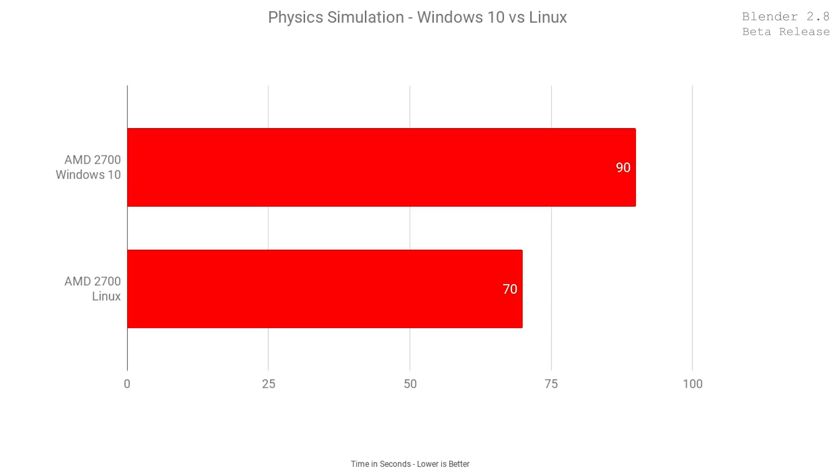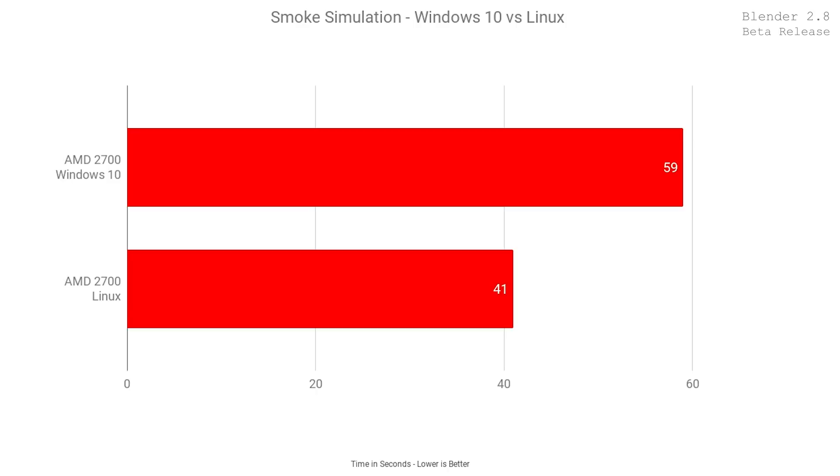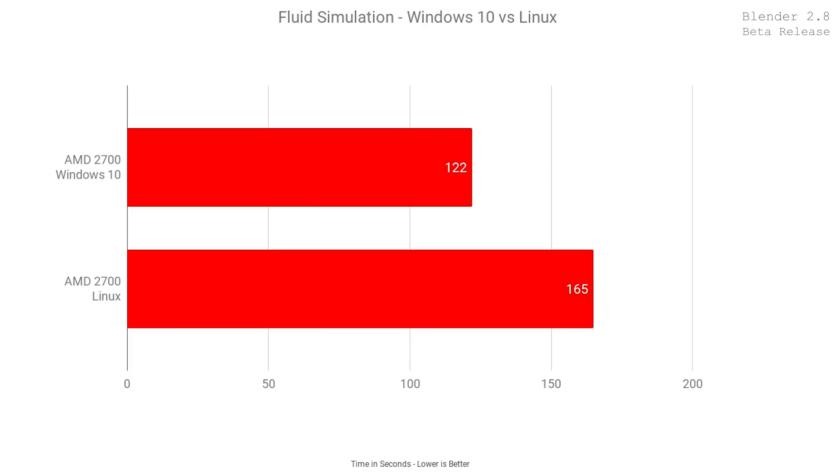As promised, here are the Linux results. Blender often runs faster on Linux than Windows, as Linux is more optimized for CPU performance. Running through the AMD benchmarks: the physics benchmark was 25% faster on Linux, coming in at just 70 seconds. The smoke simulation was 36% faster on Linux, coming in at 41 seconds. The fluid simulation was surprisingly 30% slower on Linux, coming in at 2 minutes and 45 seconds — likely an optimization issue with the fluid simulator, which is known to not be well optimized and has been discussed as a candidate for improvements.